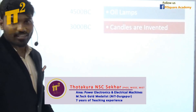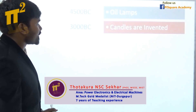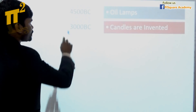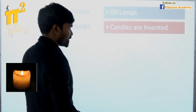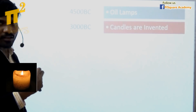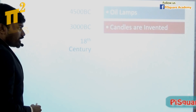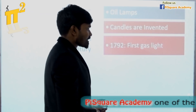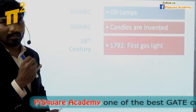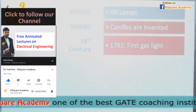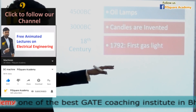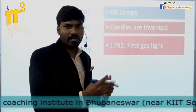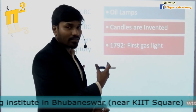If you go to the era before Christ, 4500 years before Christ, they were using oil lamps for artificial light. After 1500 years, candles were invented to get artificial light. In the 18th century, strictly speaking 1792, they got the first gas light — by burning gas they produced light. Till this point, there is practically no electricity used, though some people were experimenting on electricity, but nothing came out of it.